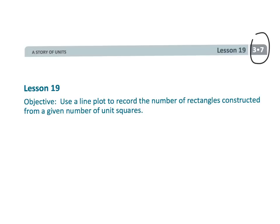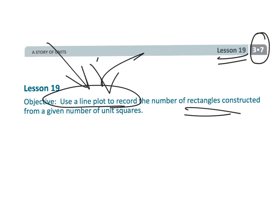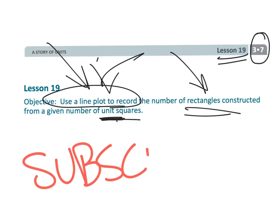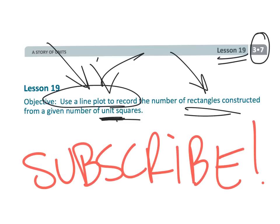And that wraps up third grade module seven lesson 19. Students are using a line plot to record a whole bunch of data that they've created, basically based on how many rectangles can you create given that number of unit squares each time. And just one last thing, please consider subscribing to my channel. Thank you.